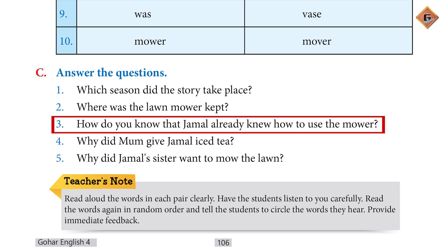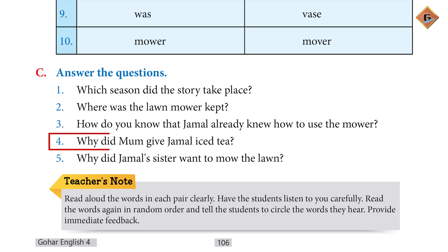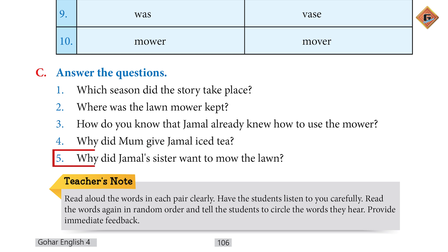Question 3: How do you know that Jamal already knew how to use the mower? Jamal already knew how to use the mower because he had seen his father using it. Question 4: Why did mom give Jamal iced tea? Mom gave Jamal iced tea because he was feeling hot. Question 5: Why did Jamal's sisters want to mow the lawn? Jamal's sisters wanted to mow the lawn because they also wanted to earn pocket money and keep themselves busy.